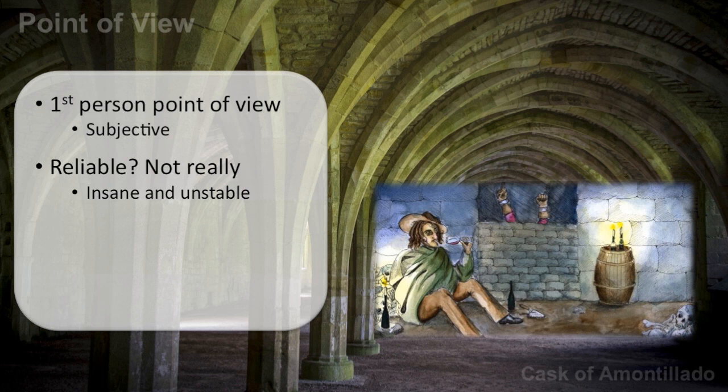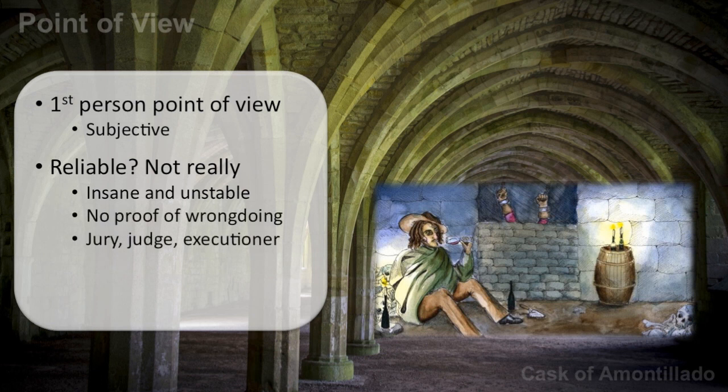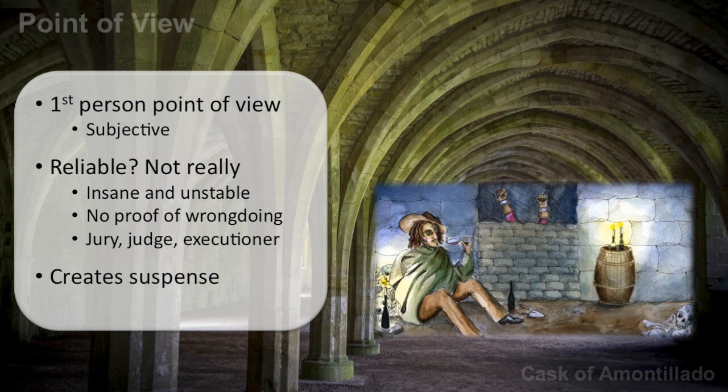The other reason we cannot really trust the narrator is that there is no proof of wrongdoing. He doesn't tell us what Fortunato has done. So Montresor makes himself both jury, judge, and in this case, executioner. It's safe to say that we cannot trust the narrator. The insanity of the narrator also creates suspense — it makes us want to keep reading and we wonder what this man is capable of doing.